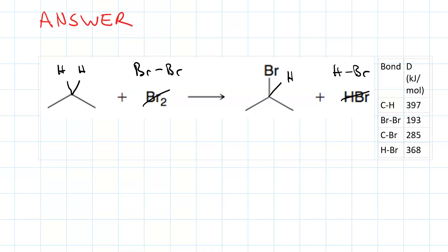So what's broken? One of these C-H bonds and this Br to Br bond. So we have 397 plus 193.